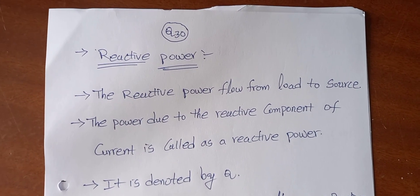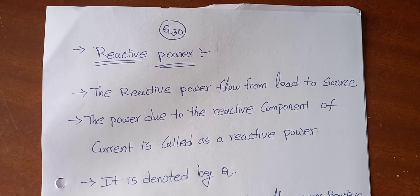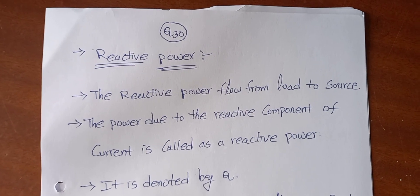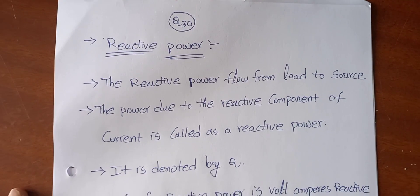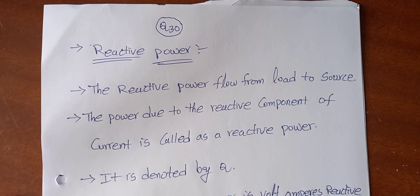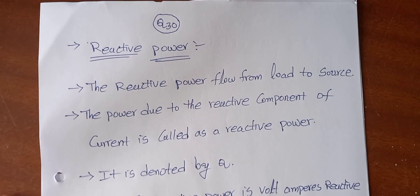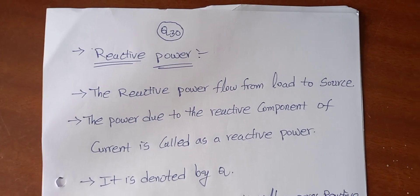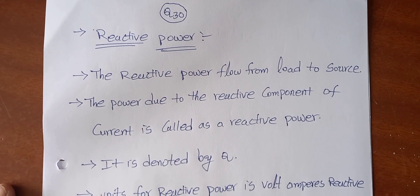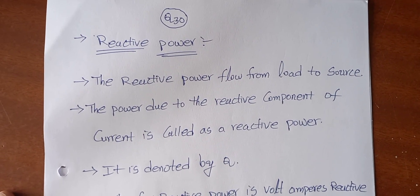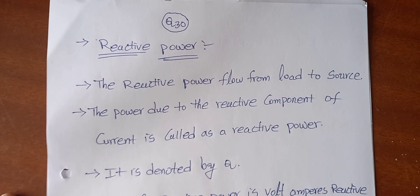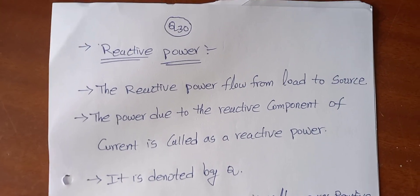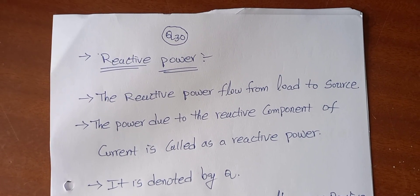Out of 50, our next question is the 30th question — that one is reactive power. So out of 4, this is the second question. Reactive power, in the sense, is due to reactive components — the power will be generated. Suppose, for example, at the load end, some equipment has reactive components like inductance or capacitance. These are the reactive components.